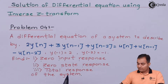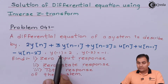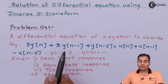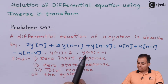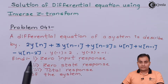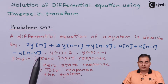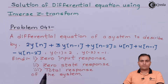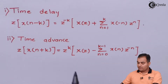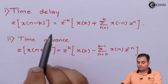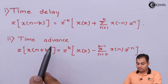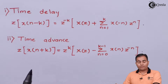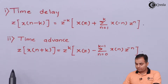Since initial conditions are given, we are going to apply the one-sided time shifting property of the Z-transform. We will study the delay formula and advance formula of the one-sided time shifting property, both of which are derived in the properties section.